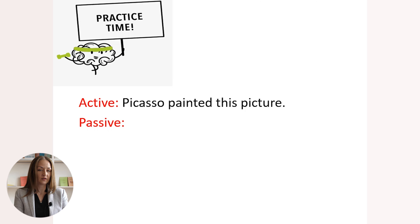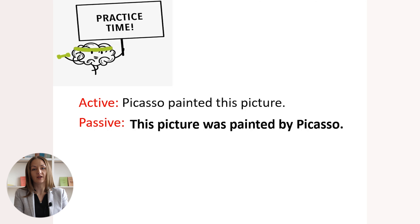Passive voice is not one of the easiest grammar topics, but step by step you are going to master its rules. Now it's time to practice. Your task is to change the given active voice sentence into passive. First sentence: 'Picasso painted this picture' — past simple. Pause and rewrite. Ready? Let's check: 'This picture was painted by Picasso.'